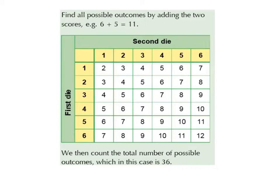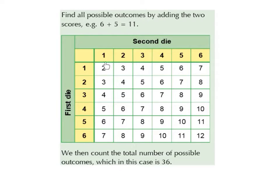We have our second die — the options are 1, 2, 3, 4, 5, and 6. Find all possible outcomes by adding the two scores. For example, 6 plus 5 makes 11, so if we've got 6 on the first die and 5 on the second die, we get 11 as a total. So this 2 comes from 1 plus 1, this 3 from 2 plus 1, this 4 from 3 plus 1, and so on.